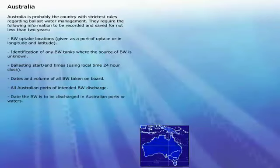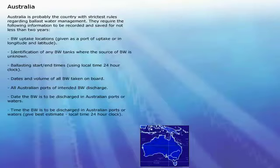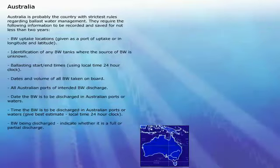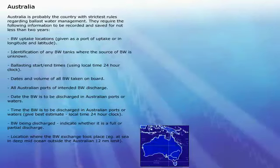Dates and volume of all ballast water taken on board. All Australian ports of intended ballast water discharge. Date and time the ballast water is to be discharged in Australian ports or waters — give best estimate, local time 24-hour clock. Whether the ballast water being discharged is a full or partial discharge. Location where the ballast water exchange took place, e.g. at sea, in deep mid-ocean, outside the Australian 12 nautical mile limit.